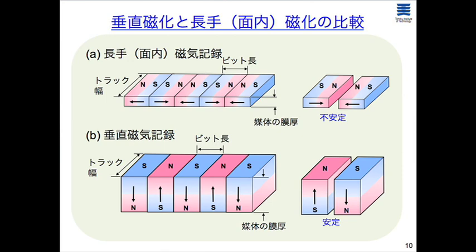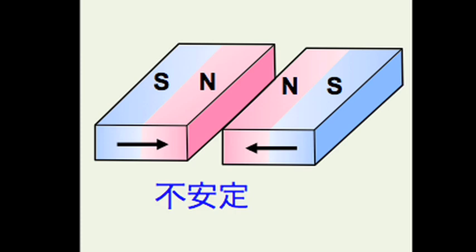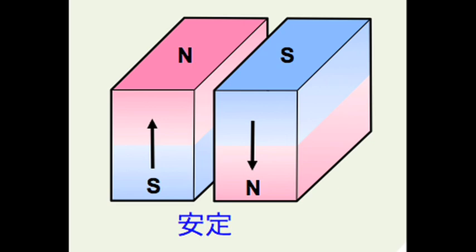This led me to reconsider. One bit at low density occupies a long region; at high density the bits crowd together. Reconsidering vertical versus horizontal recording: in horizontal recording, taking out a single bit unit shows that N faces N and S faces S — extremely unstable, tending to move. If vertical magnetization could be achieved, the repulsive force becomes an attractive force, causing aggregation, which is most suitable for high-density recording.